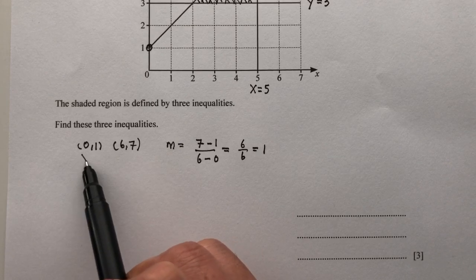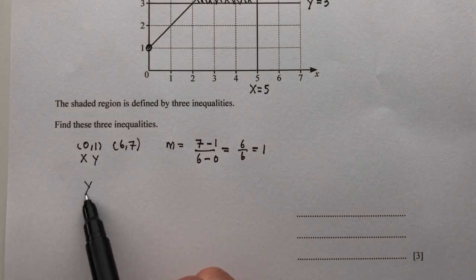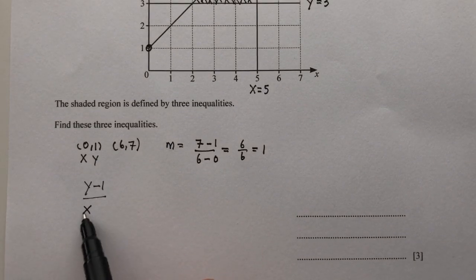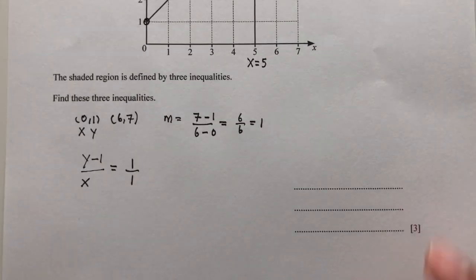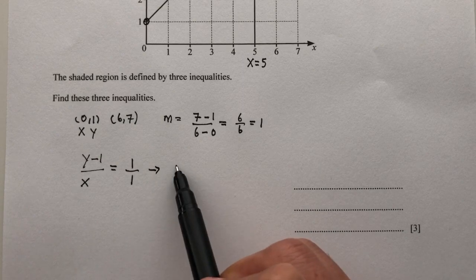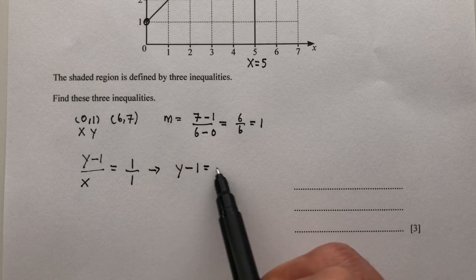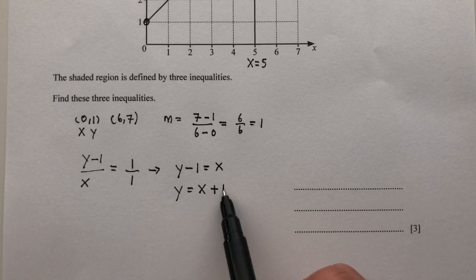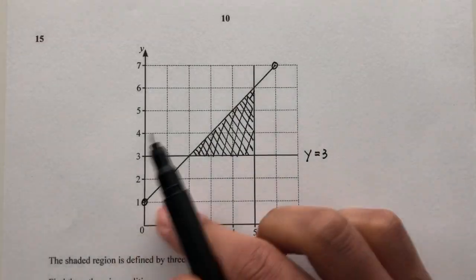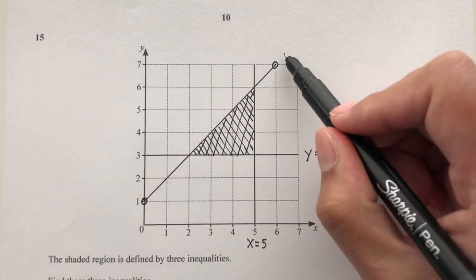Once you have that, you can find the equation by using one of the two points. We use this one: y minus 1 over x minus 0 is equal to 1. Cross multiply - you will have y minus 1 equal to x, so y is equal to x plus 1. The equation for this line is y equals x plus 1.